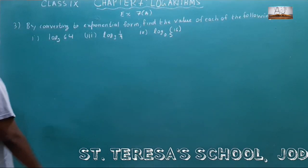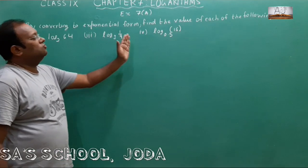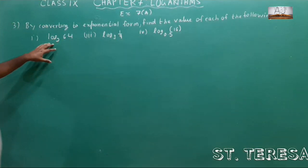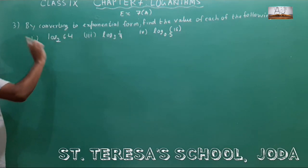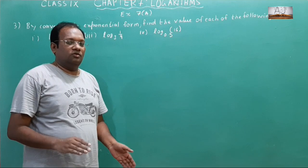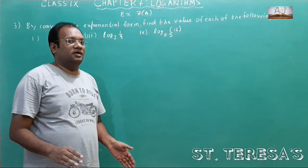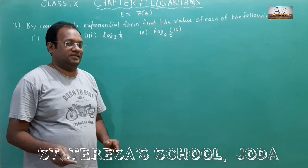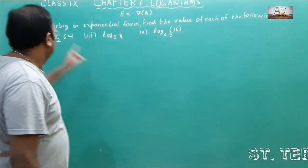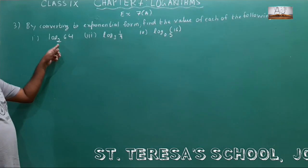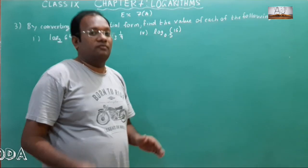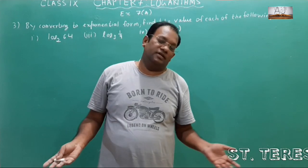Now question number 3: by converting to exponential form, find the value of each of the following. We have to find the value of log 64 with base 2. You know 2 to the power 6 equals 64, so the answer is 6. But we don't write directly — we have to convert it to exponential form first and then find the value. This is the process we must follow.